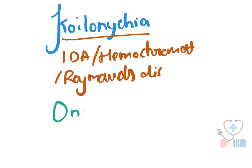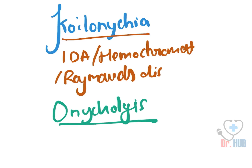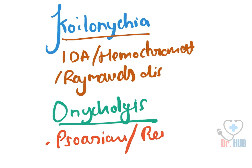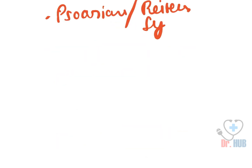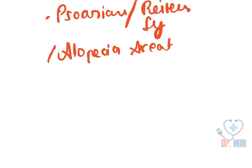Next we look at onycholysis. Onycholysis is seen in cases of psoriasis, Reiter's syndrome, and alopecia areata.